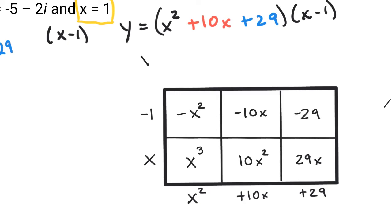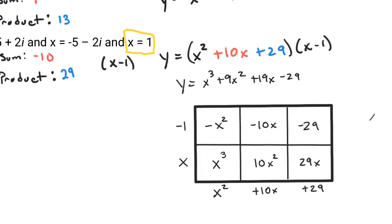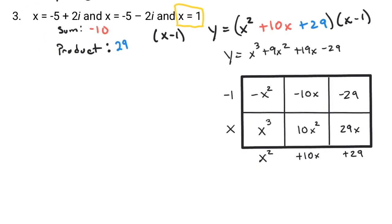So when you combine your like terms, you'll end up with y equals x cubed, positive 9x squared, positive 19x, and negative 29. So that would be, if you have the roots of negative 5 plus 2i, negative 5 minus 2i, and x equals 1, this is the third degree polynomial that will give you those roots.